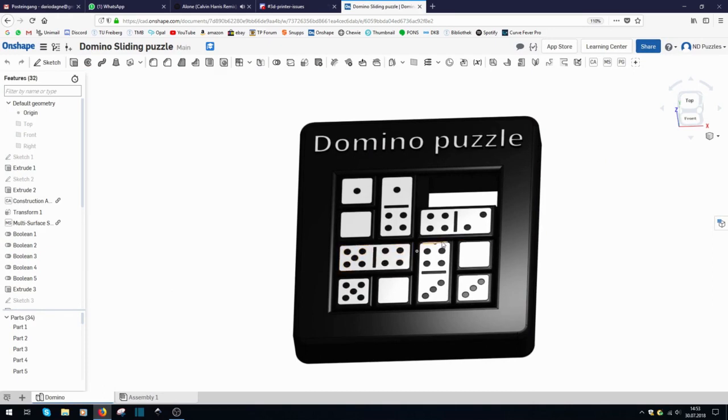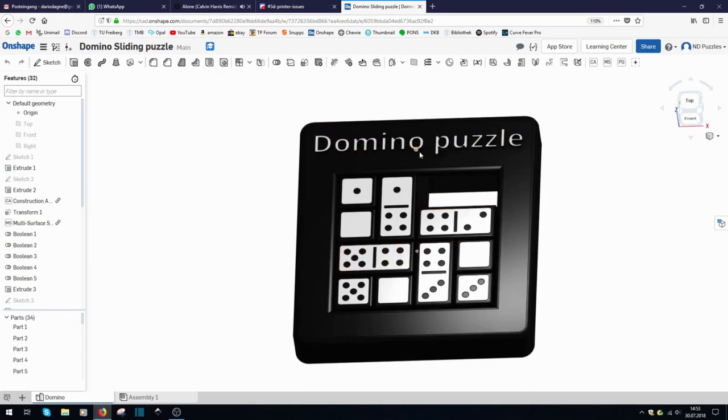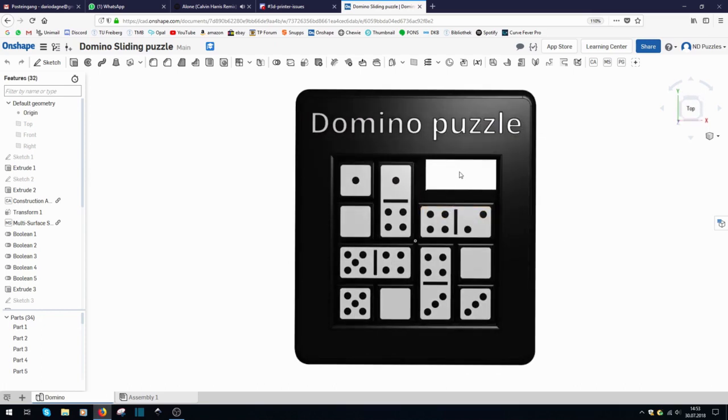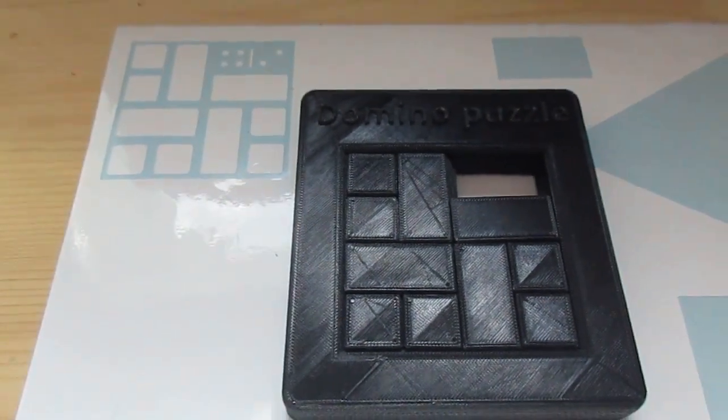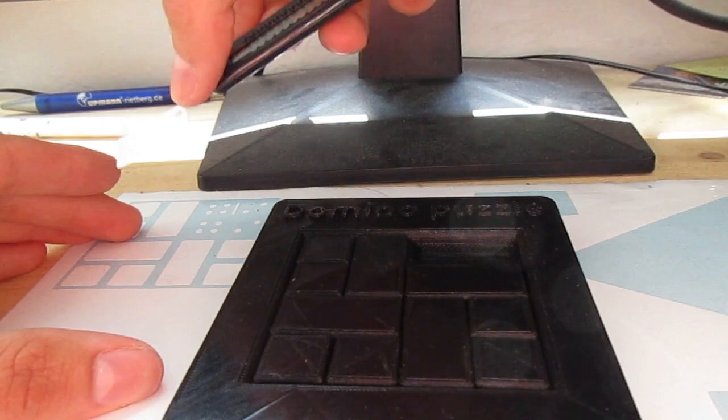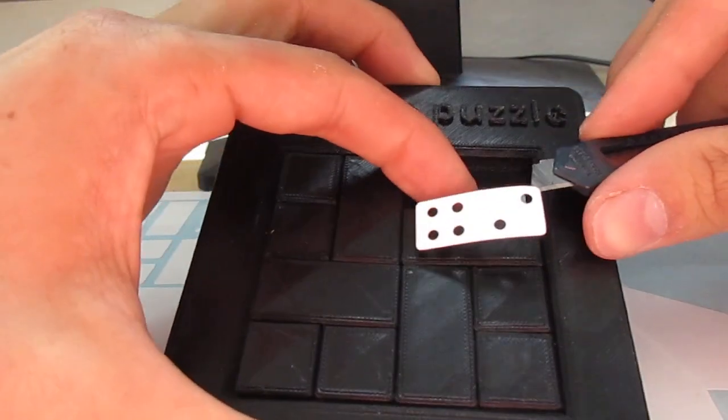Once all that planning was done, I sent the file to Nico, who printed it for me. In the meantime, I prepared the stickers using my vinyl cutting machine. The puzzle turned out awesome and was fully functional without a lot of post-processing, so all that was left to do was to apply the stickers to it.